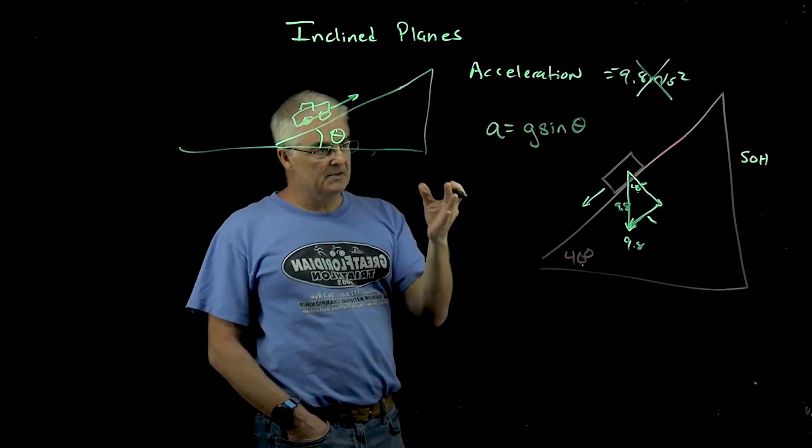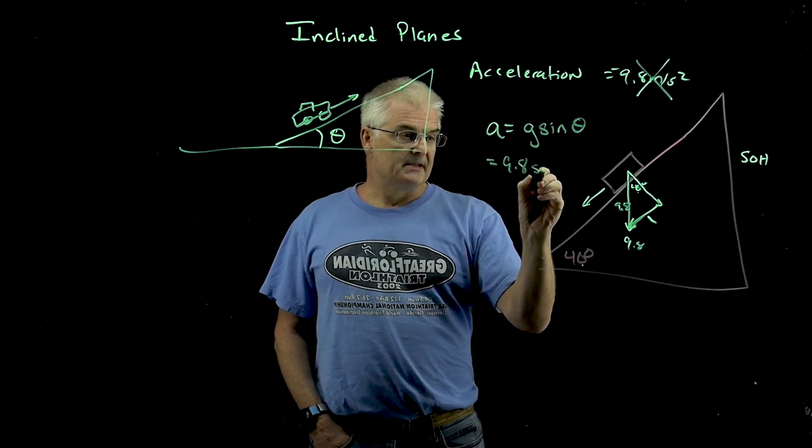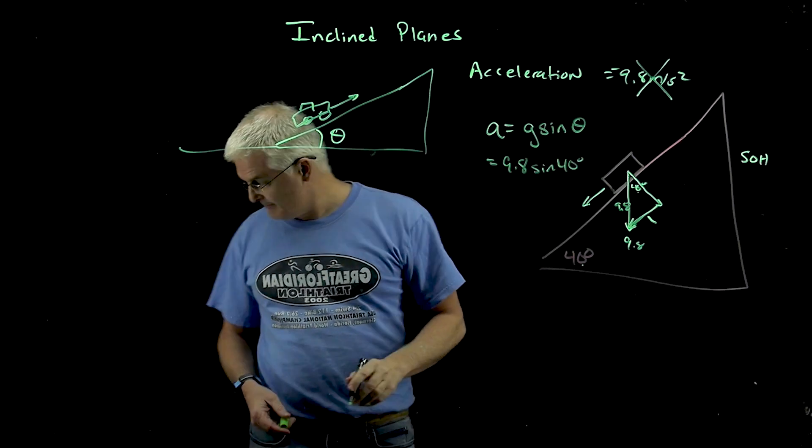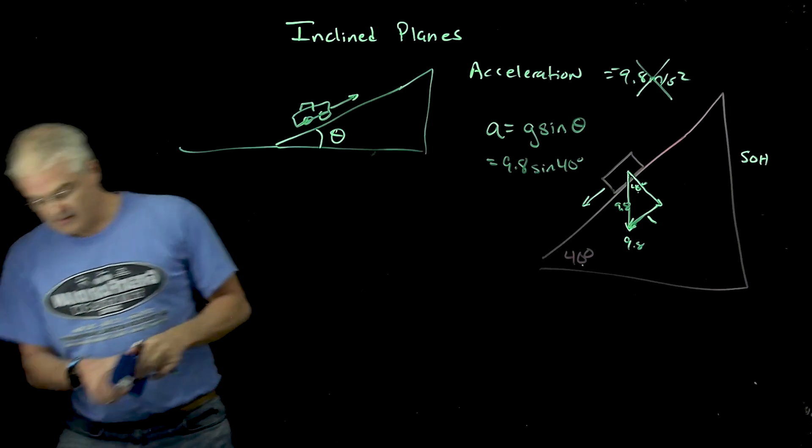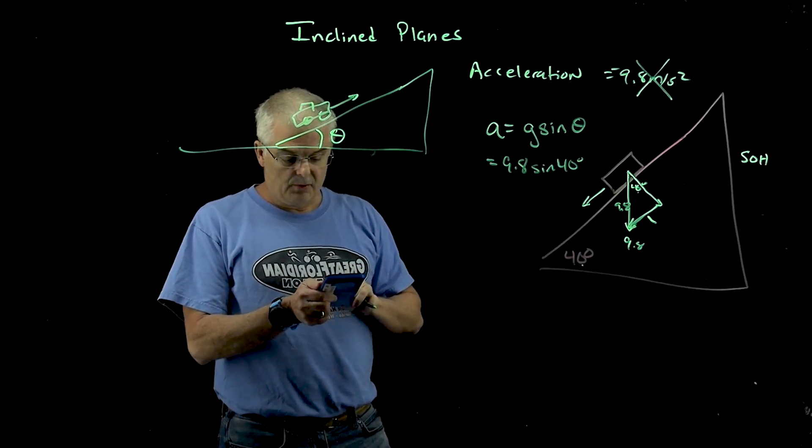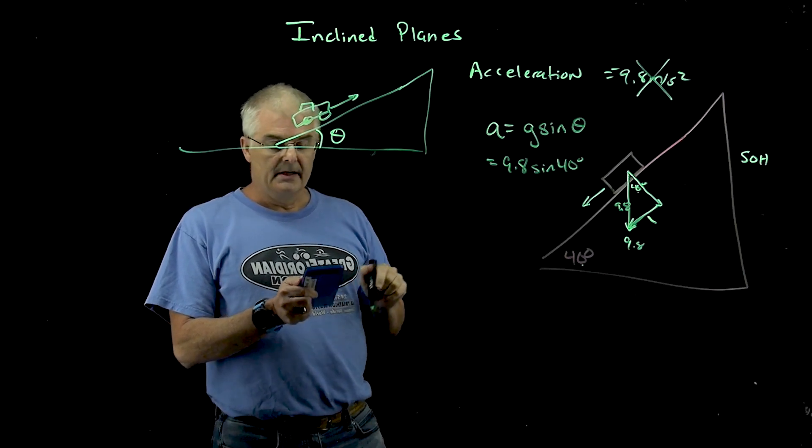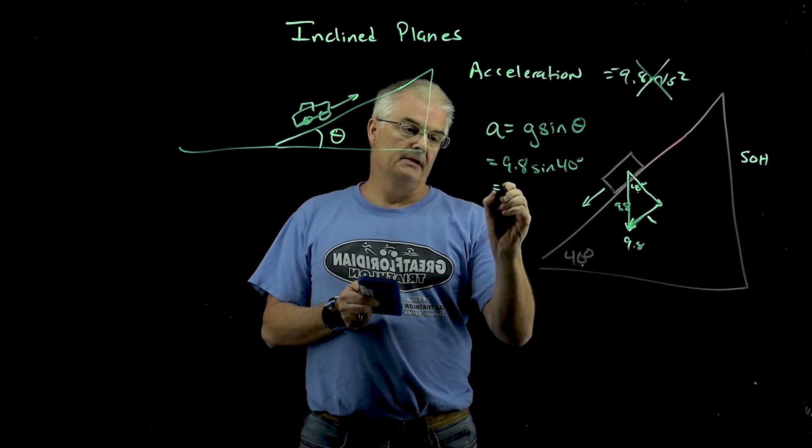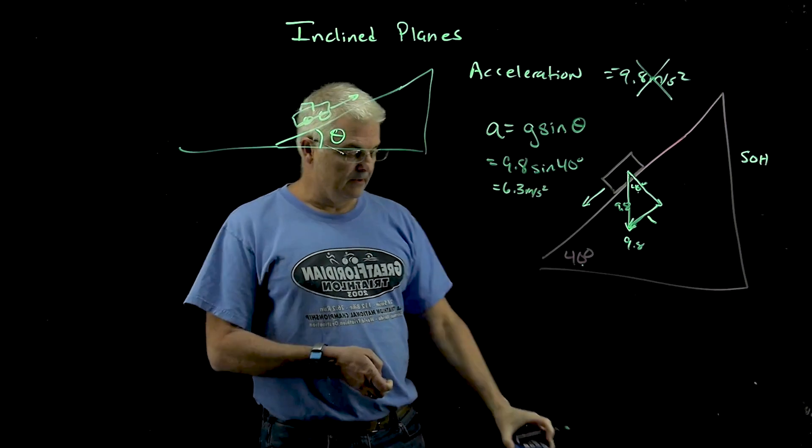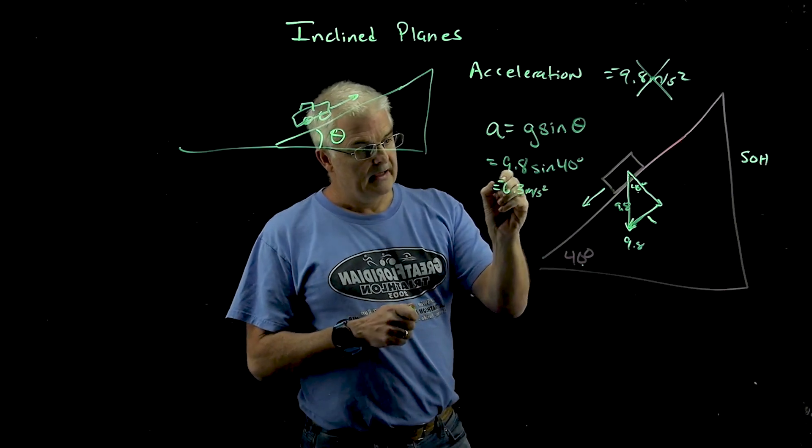So in this particular case, assuming we're on the Earth, it'll be 9.8 times the sine of 40 degrees. So in this particular example, I'll take 9.8 sine of 40 degrees. And I get 6.3 meters per second squared. So at a 40 degree angle, instead of 9.8, I have 6.3. And actually, it would be negative. Now a couple things on these kinds of problems that you want to watch.